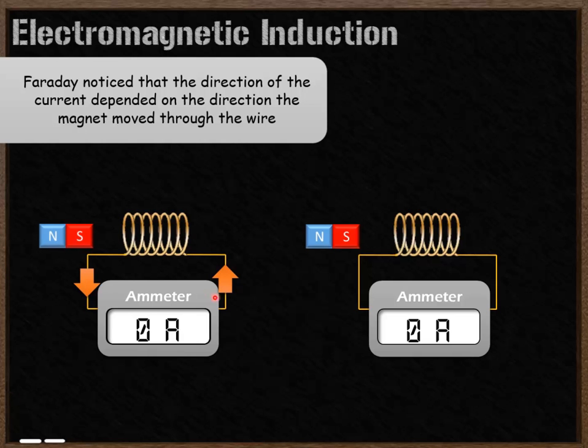In this example, the current flowed in this direction. As the magnet went through this way, the current moved in this direction.